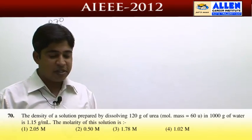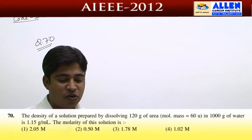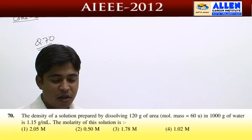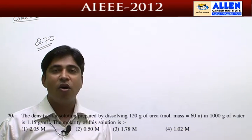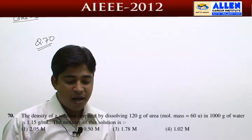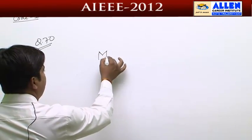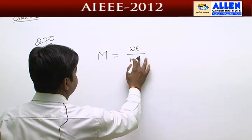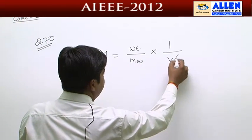Next question, number 70. The density of a solution prepared by dissolving 120 grams of urea in 1000 grams of water is 1.15 grams per milliliter. The molarity of this solution is — this is a very easy question on solutions and concentration. Molarity equals weight of solute divided by molecular weight, multiplied by 1 divided by volume of solution in liters.